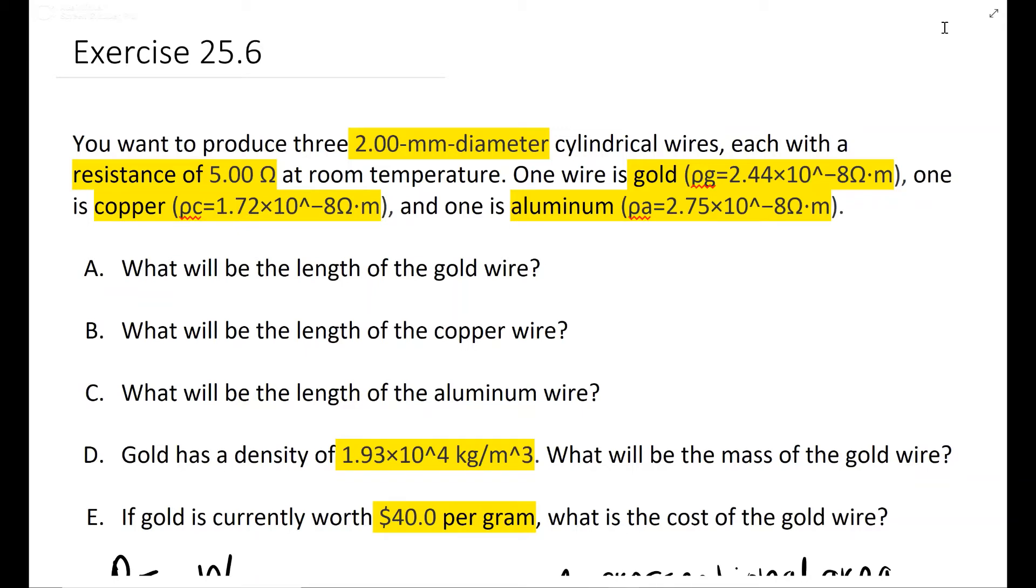All right, this is exercise 25.6. So they say you want to make three wires: gold, copper, and aluminum. They give you the resistivities, that is the lowercase ρ. They tell you the diameter is two millimeters and they all have a resistance of five ohms. They want to find the length of all three wires and then the mass of the gold wire and the value of that wire using its mass.